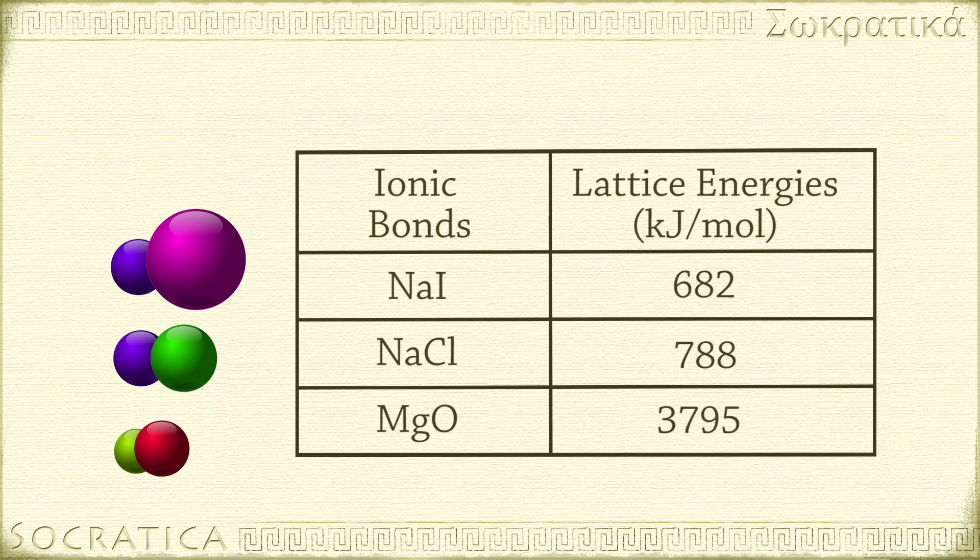Magnesium oxide, MgO, on the other hand, is formed from Mg2+ and O2−. The higher charges mean a stronger attraction, and MgO has a lattice energy of 3795 kJ per mole.